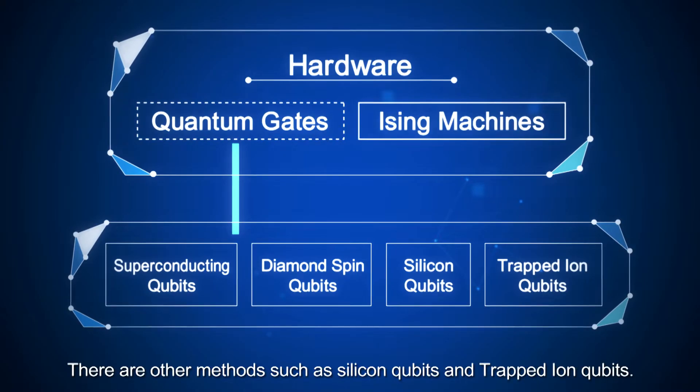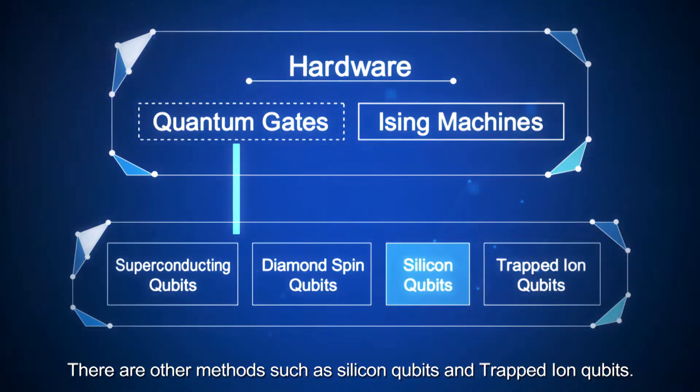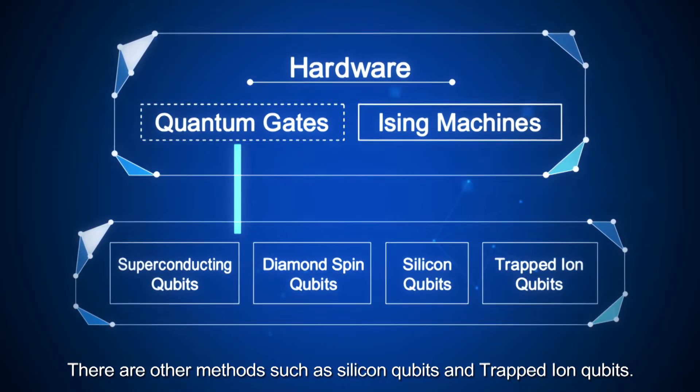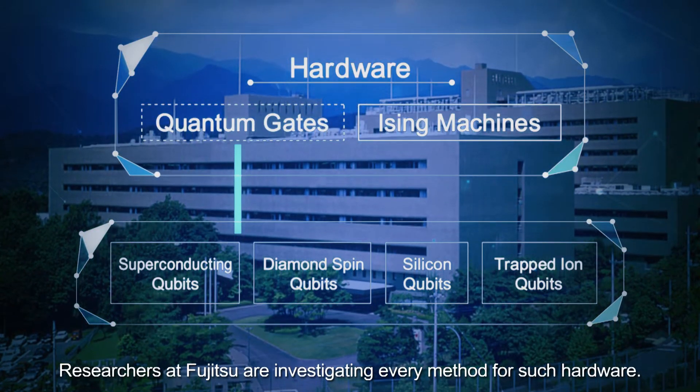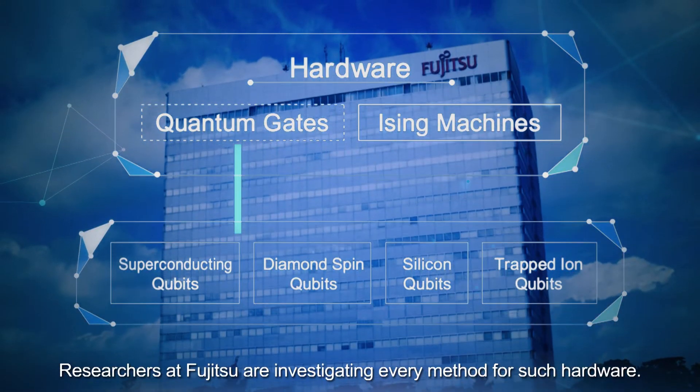There are other methods, such as silicon qubits and trapped ion qubits. Researchers at Fujitsu are investigating every method for such hardware.